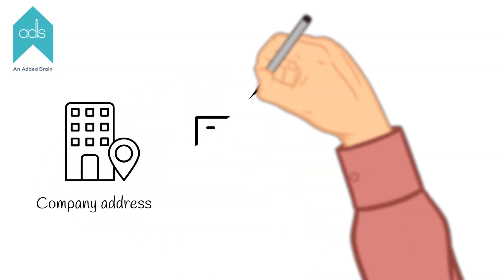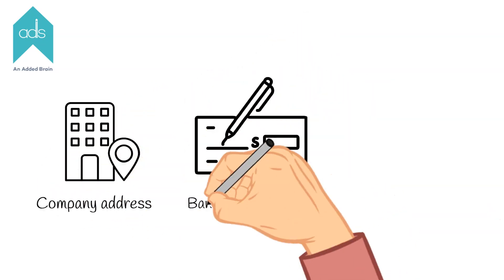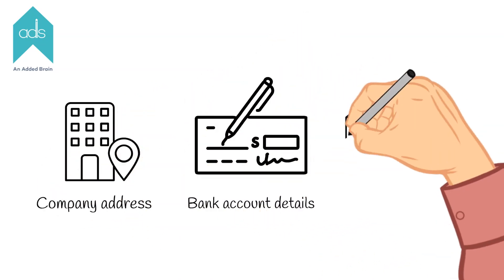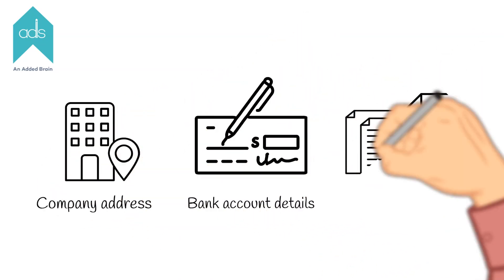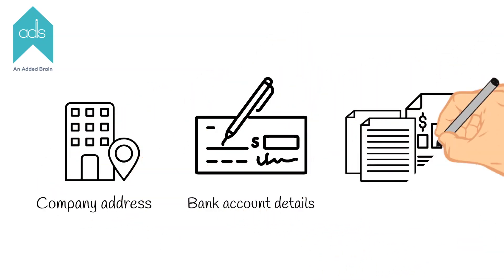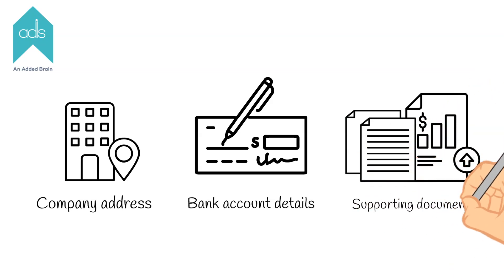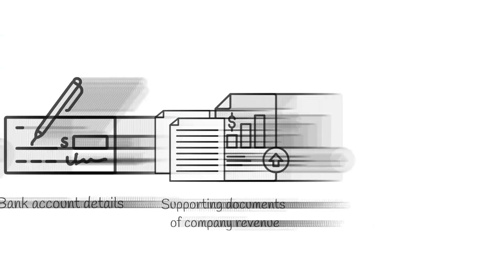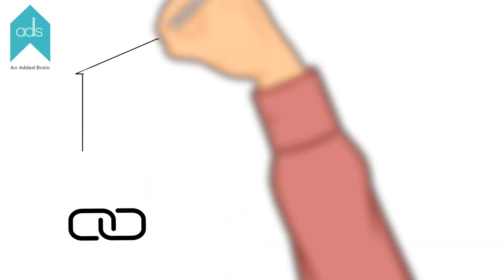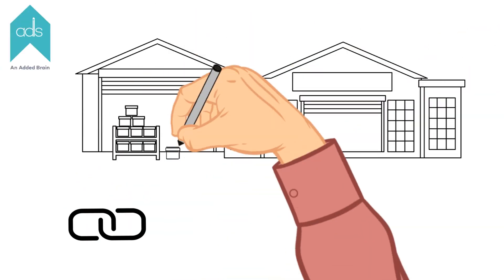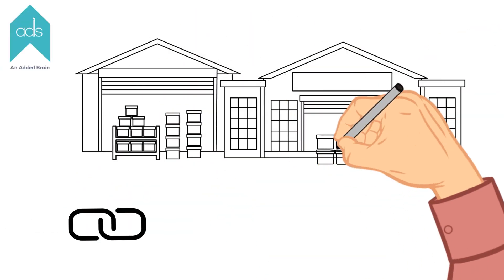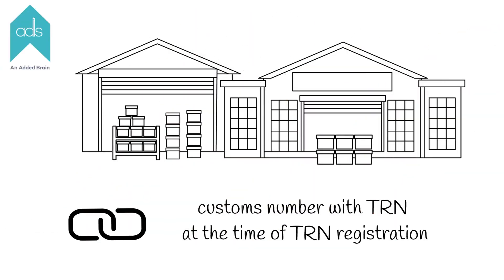Additional details like company address and bank details need to be provided. Along with documents that support the revenue earned by the company must be attached. You can link your customs number with TRN at the time of TRN registration.